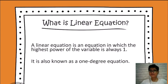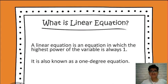Before we start, let us first know what a linear equation is. It is an equation in which there is no exponent on any of the variables, automatically making it a linear equation, also known as a first-degree equation.